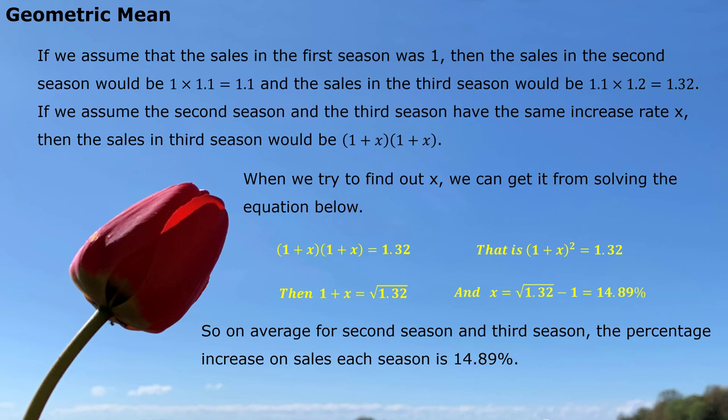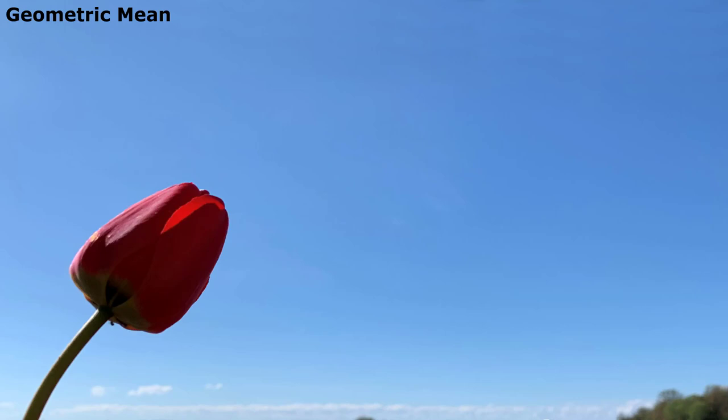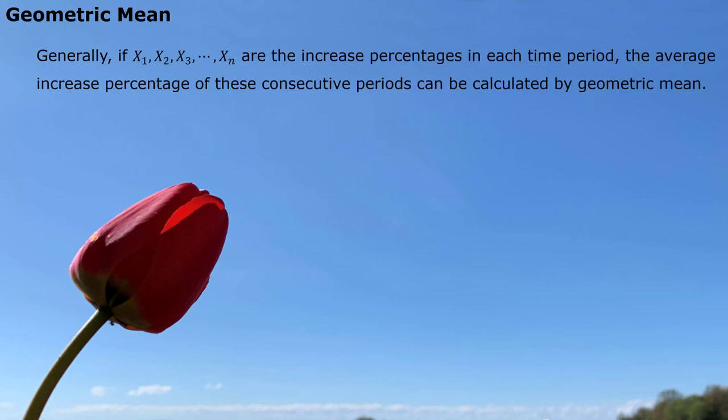So this example gives us the idea how we are going to figure out the average increase rate based on the time period. Generally, if x1, x2, x3 until xn are the increased percentages in each time period, the average increase percentage of these consecutive periods can be calculated by geometric mean. That's what the idea gave us.